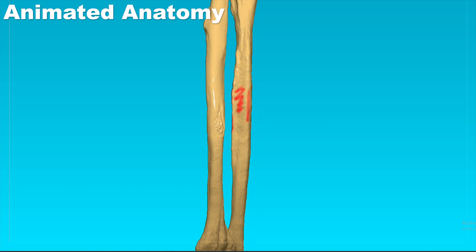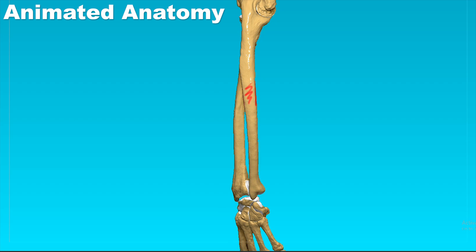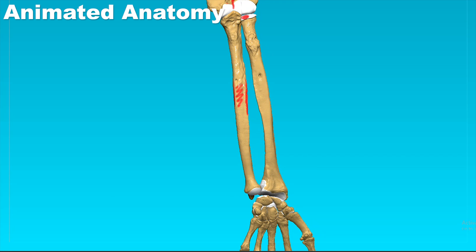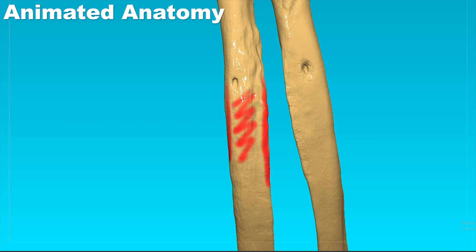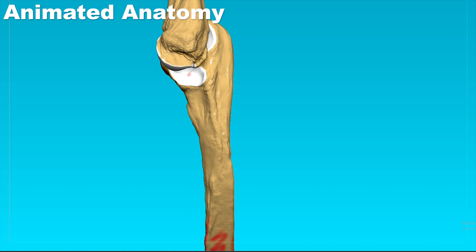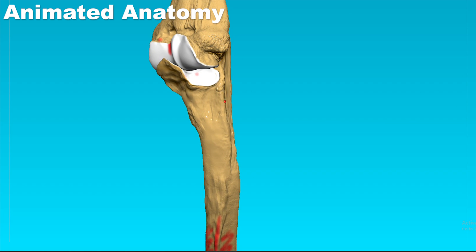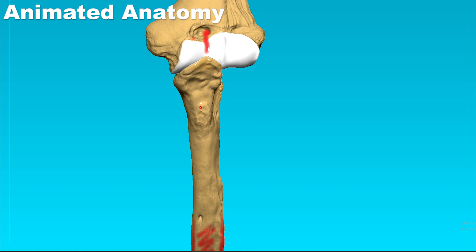Remember the posterior surface, medial surface, and the anterior surface. On the anterior surface we can see the nutrient foramen. On its lateral side we can see the supinator ridge and we can also see the tuberosity of the ulna.